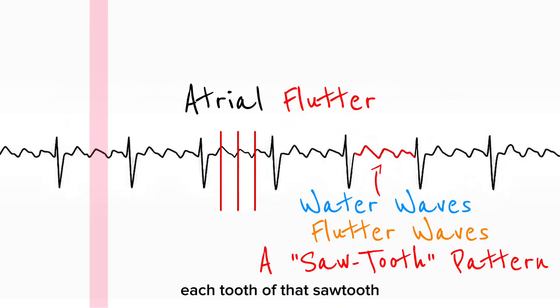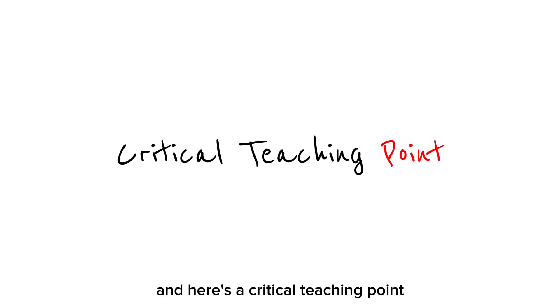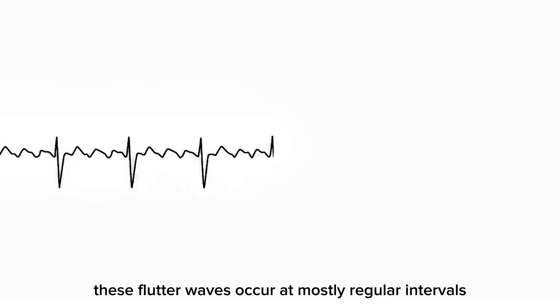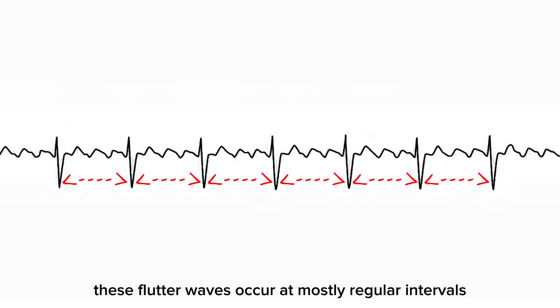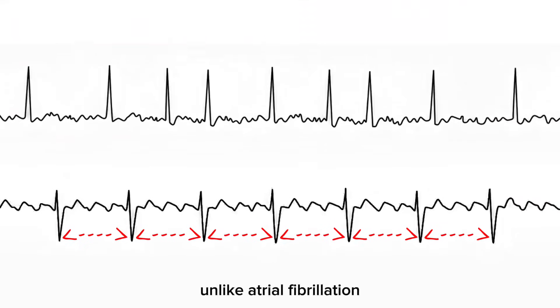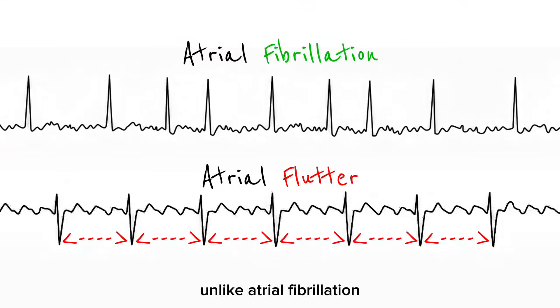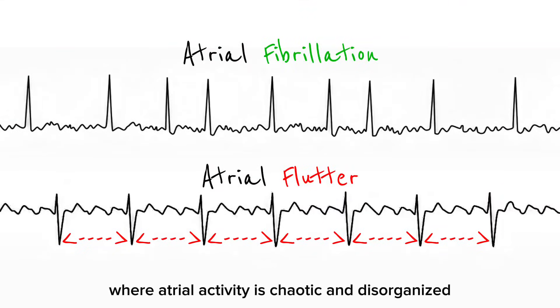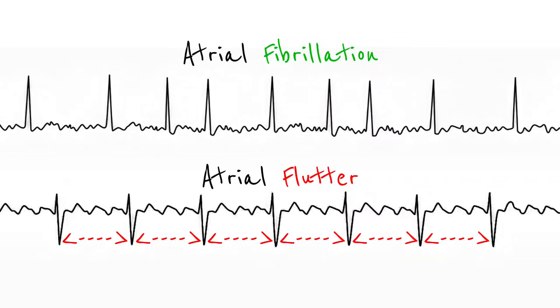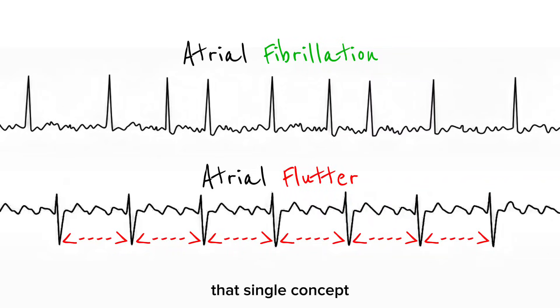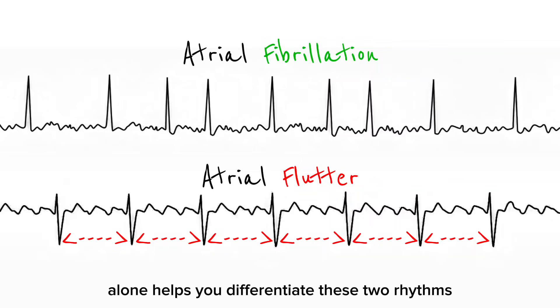Each tooth of that sawtooth represents one atrial depolarization. These flutter waves occur at mostly regular intervals — and this tells you something very important. Unlike atrial fibrillation, where atrial activity is chaotic and disorganized, atrial flutter is fast but organized. That single concept alone helps you differentiate these two rhythms instantly.